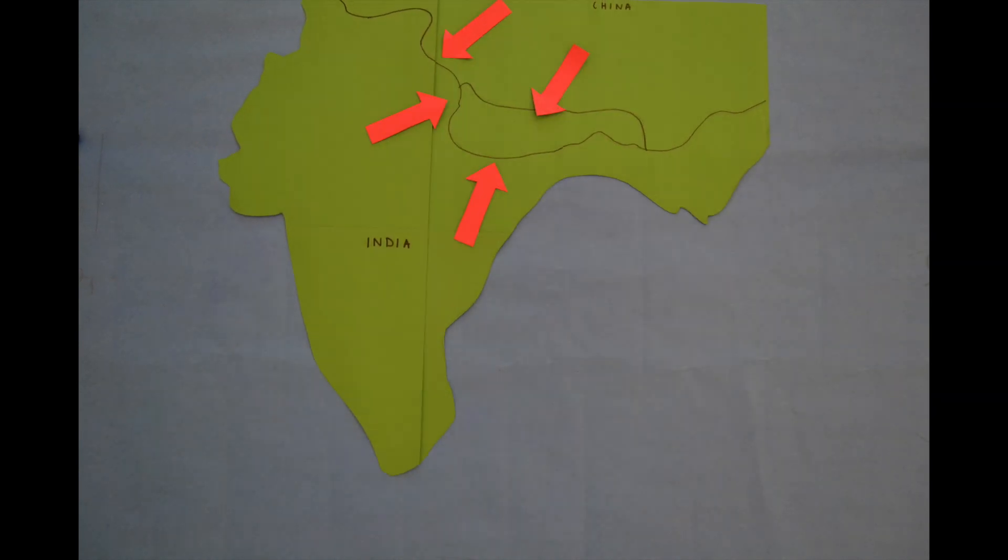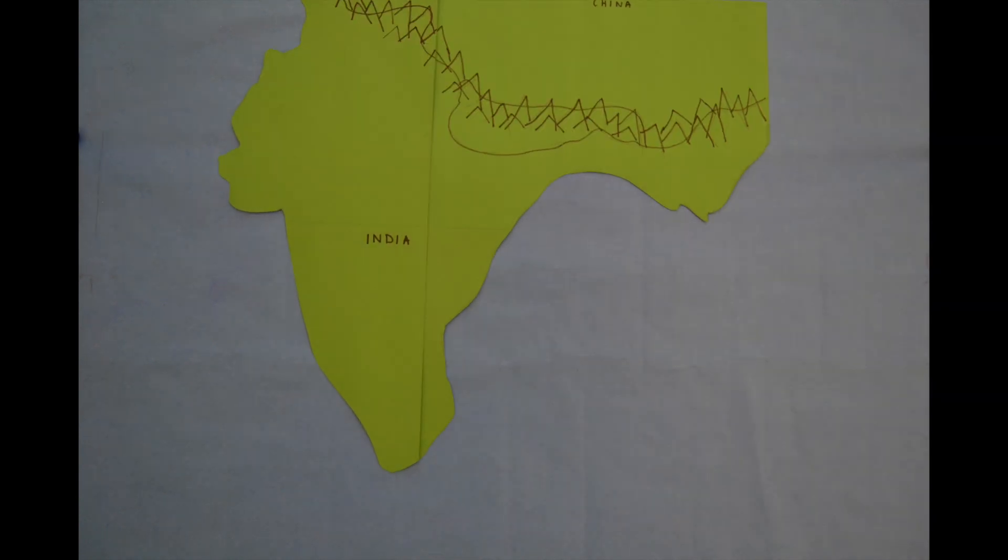Unlike oceanic continental boundaries, continental plates do not sink under one another. The force caused by the collision is great enough to fold and fault the Earth's crust, pushing up the rock to form mountain ranges like the Himalayas.